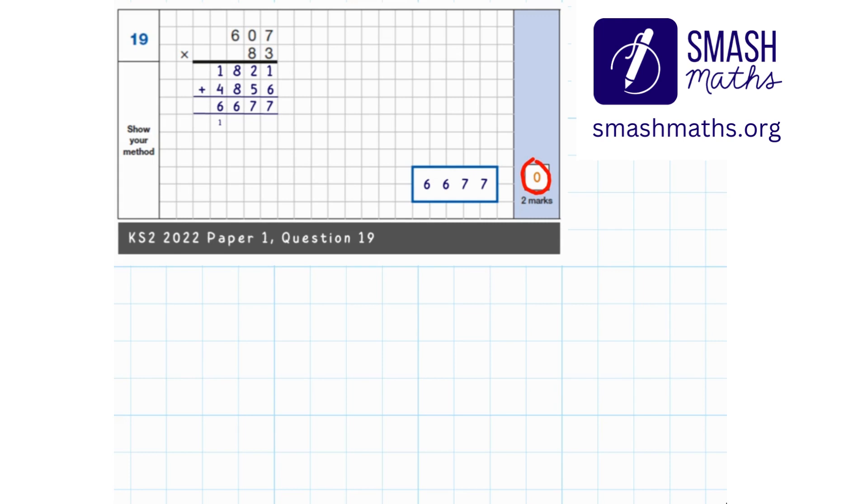Okay, so let's find the error and we'll do that by working through the whole question from the very beginning. So 607 multiplied by 83. To multiply by 83, we need to partition 83 into 8 tens and 3 ones.